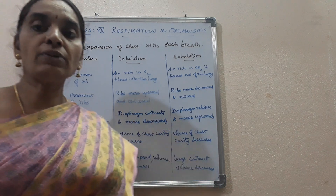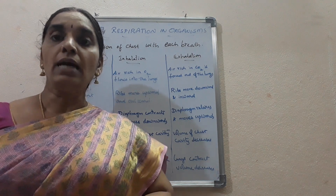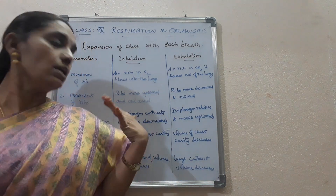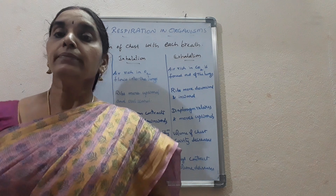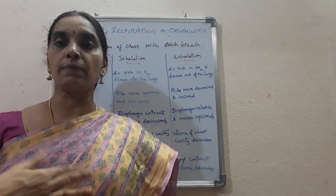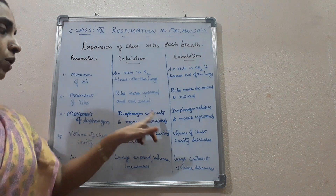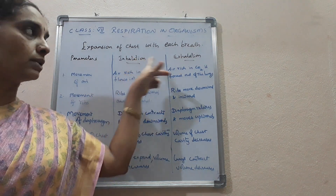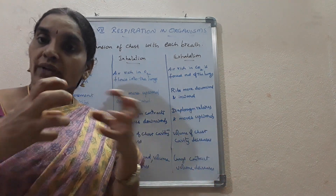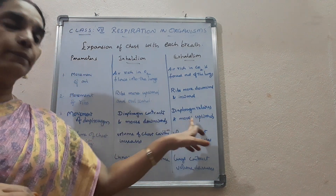The third parameter is the movement of the diaphragm. The diaphragm is located between the chest cavity — above the abdomen and below the chest. During inhalation, the diaphragm contracts and moves downward. During exhalation, the diaphragm relaxes and moves upward.